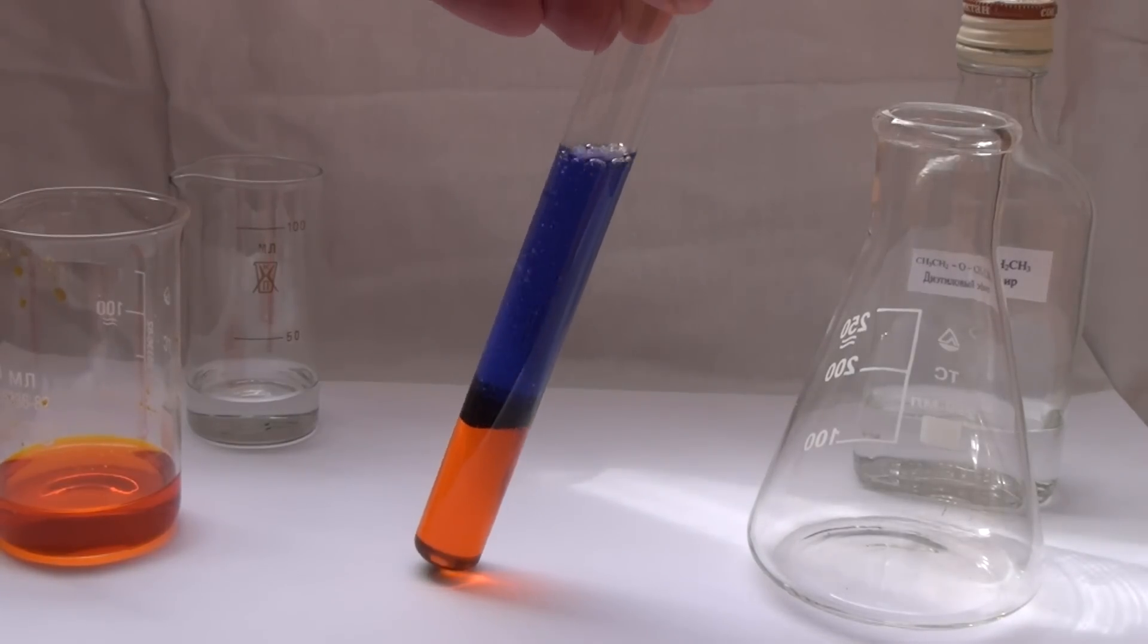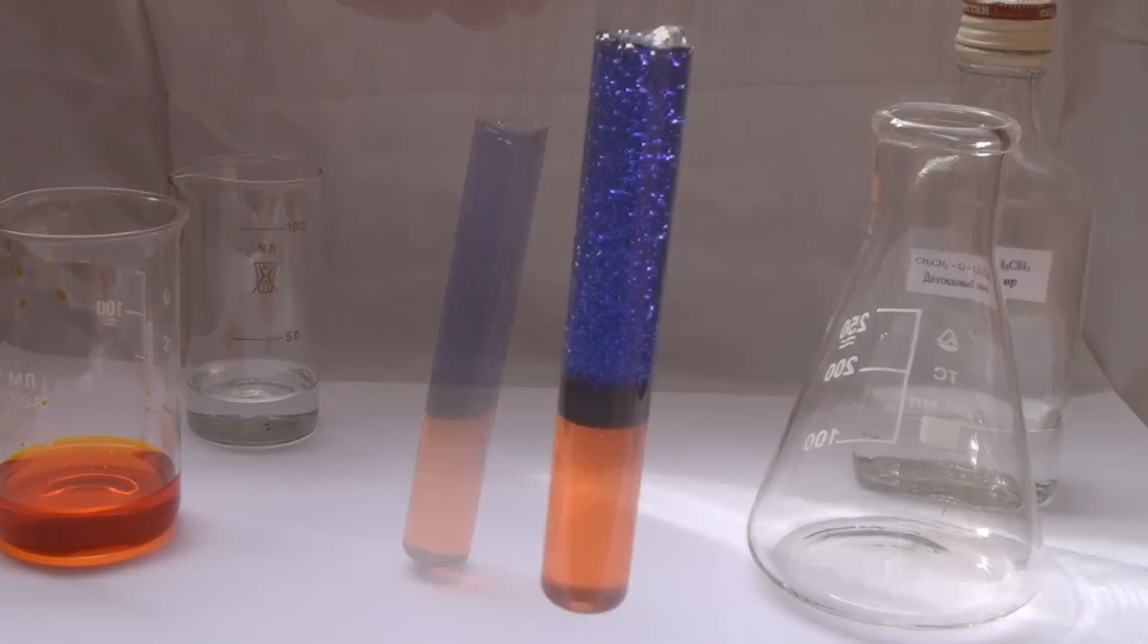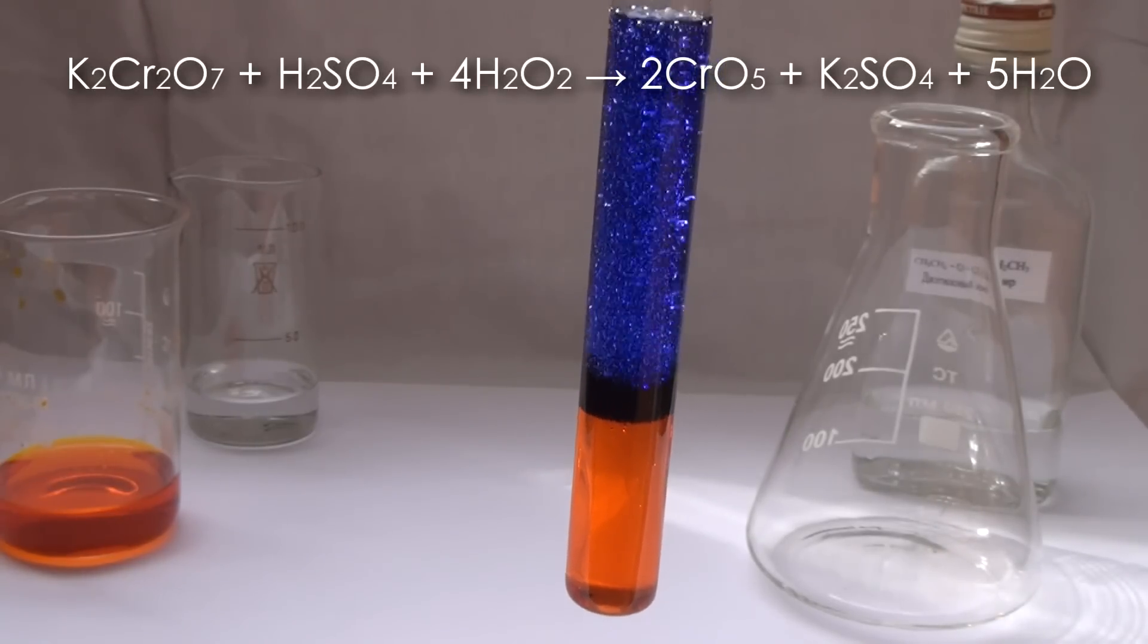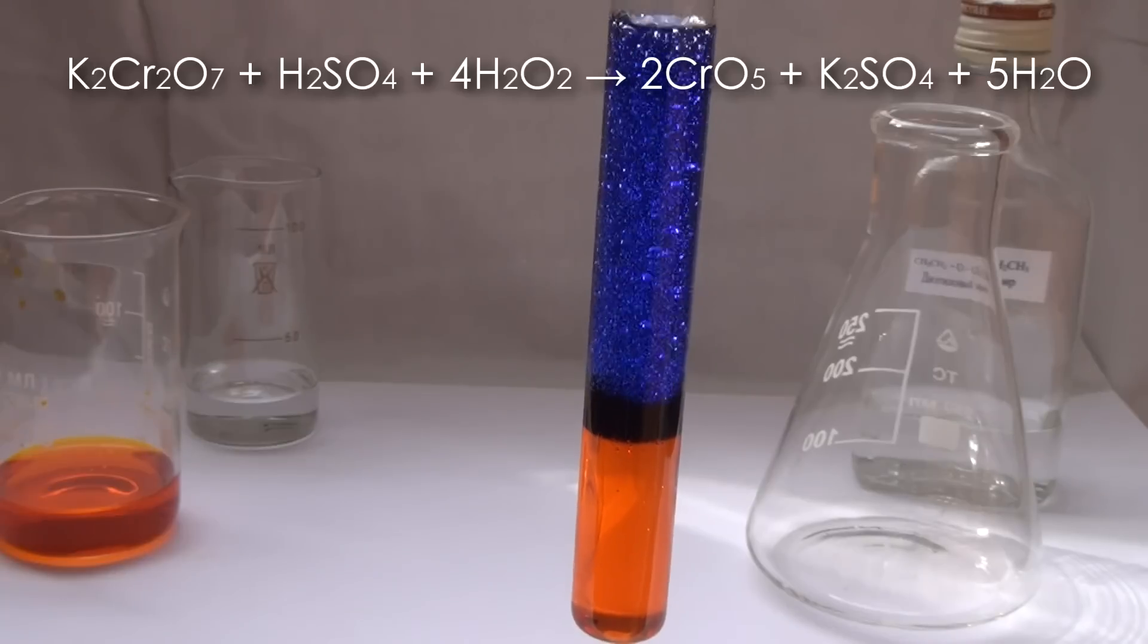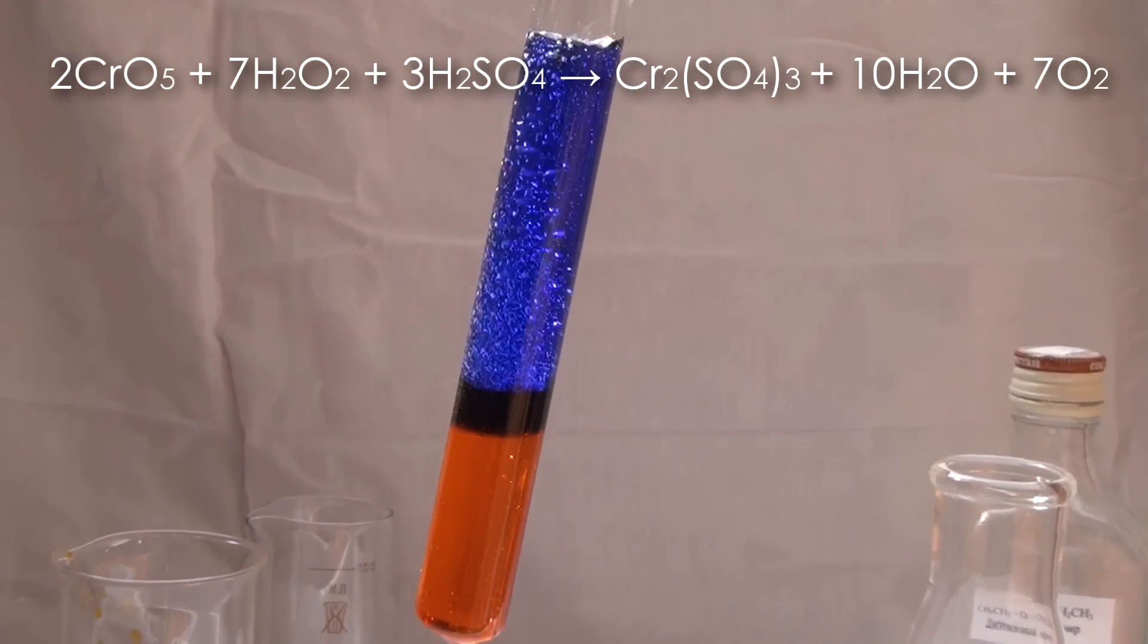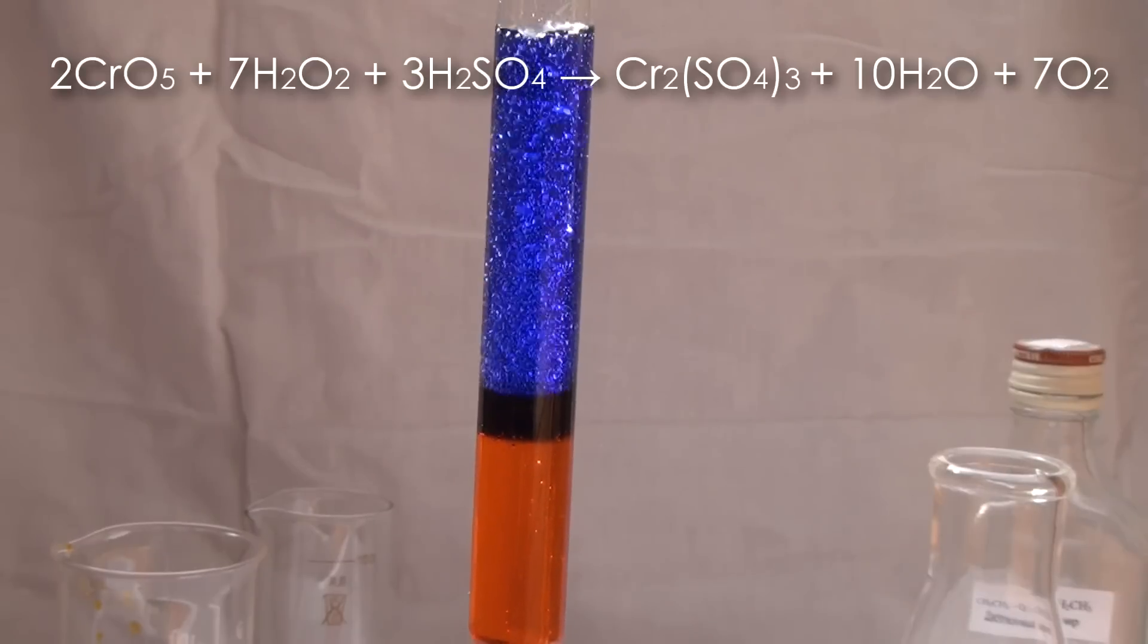When potassium dichromate and hydrogen peroxide react in acidic environment, an unstable compound is formed – chromium oxide peroxide. That compound decomposes immediately into an aqueous solution and gives the middle layer of the liquid a dark color.